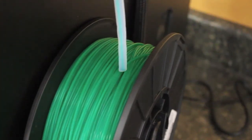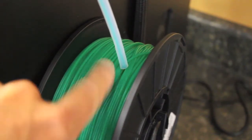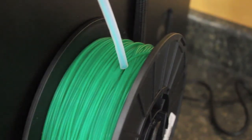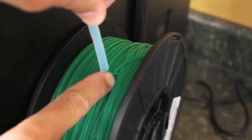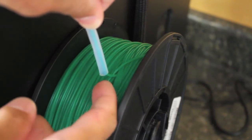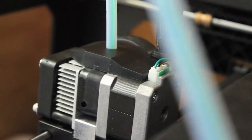What you'll notice is this filament guide tube, which feeds the PLA from the spool to the extruder, is kind of stuck. You'll notice that we have the PLA basically crossed over and knotted here.